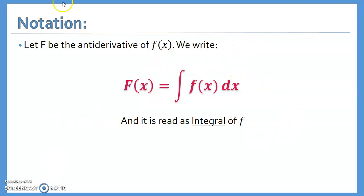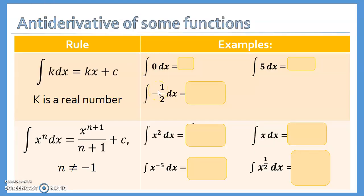Here are some functions you should know how to find the antiderivative of. First rule: if a function equals a constant K, then ∫K dx = Kx + C. To verify, find the derivative of Kx — the derivative of x is 1, so it gives you K. We always add + C because the derivative of any constant is 0, so it doesn't change anything. Always write + C when finding an integral.